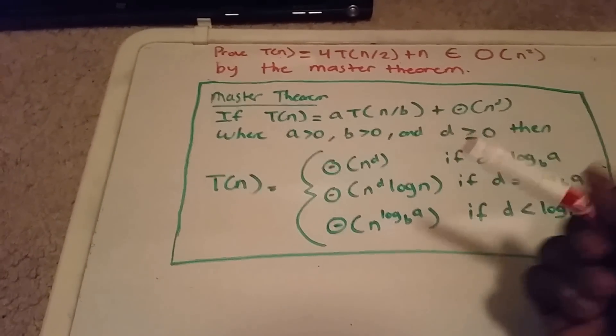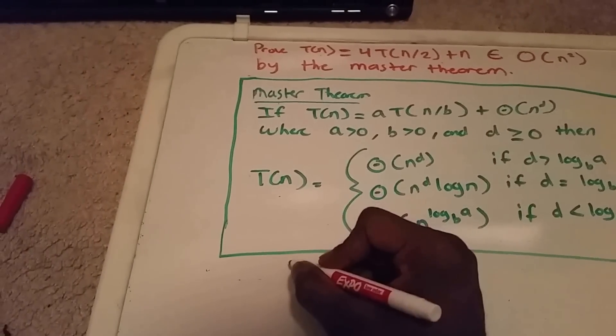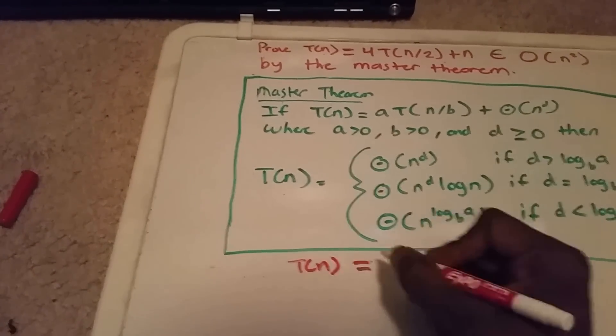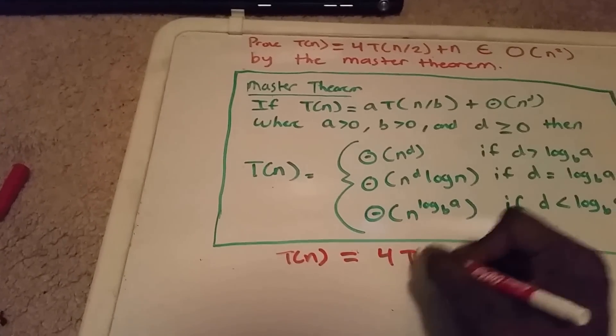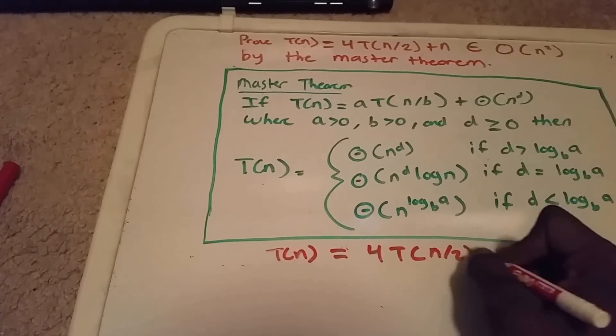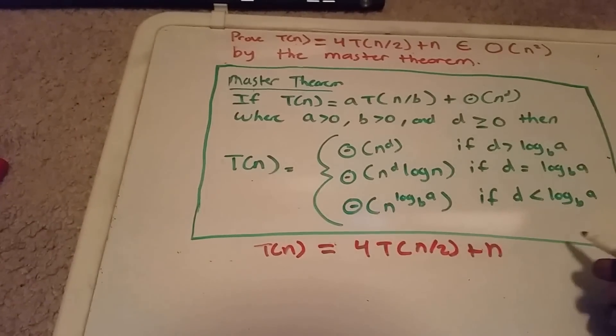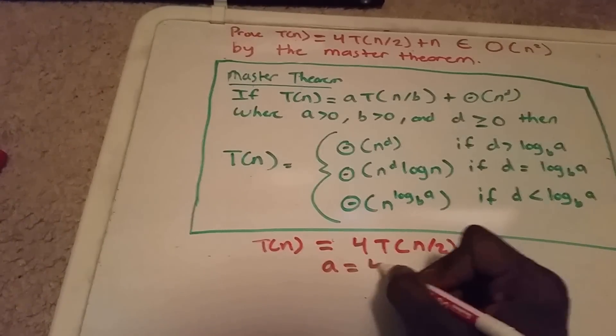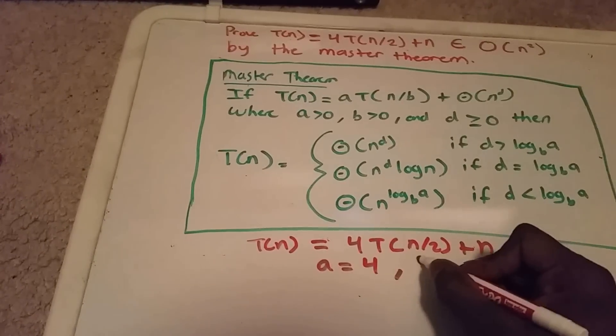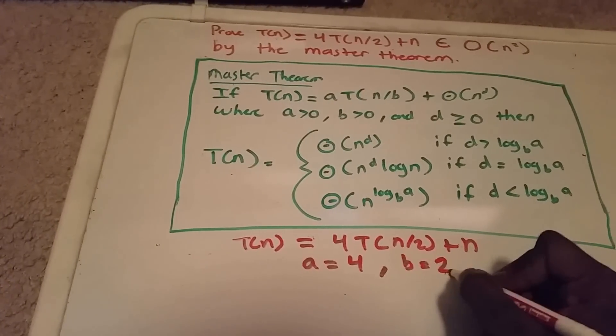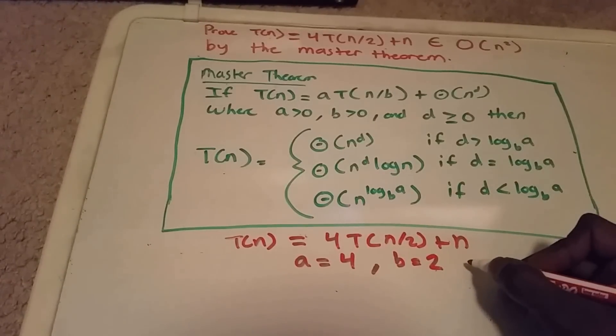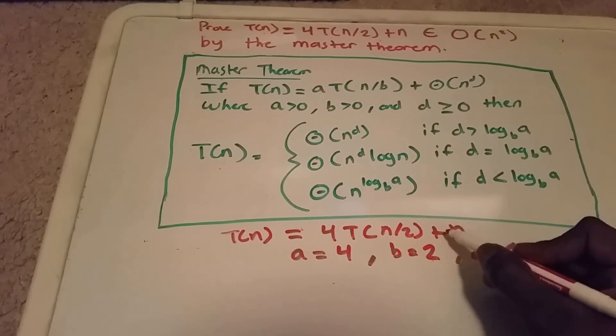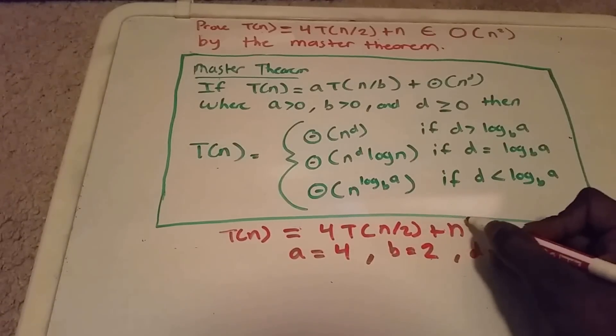So let's prove it. We see that our T(n) = 4T(n/2) + n. So that means that a equals 4, b equals 2, and d equals 1 because n is to the power of one.